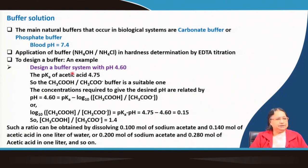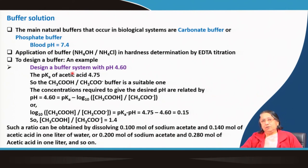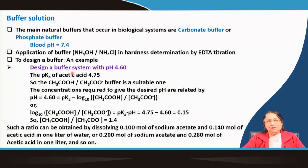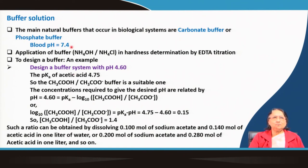Natural buffers also exist in biological systems. Many enzymatic reactions in the body require controlled pH. In biological systems, the buffers are not ammonium chloride or acetic acid/sodium acetate — they are mostly carbonate buffers or phosphate buffers. Blood pH is approximately 7.4.